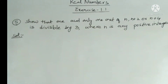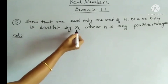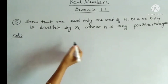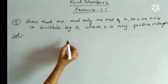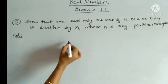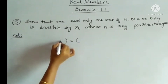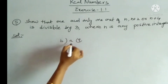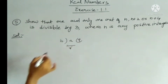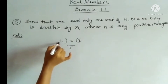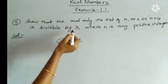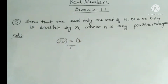In this problem the b value is 3, because we know the division algorithm: dividend equals divisor into quotient plus remainder. The divisible number here is 3, so b equals 3.